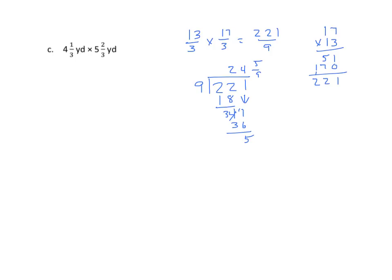Let's do the area model. Should come up with the same answer. 4 and 1 third decomposes to 4 plus 1 third, partition. 5 and 2 thirds, partition. Multiply 5 times 4, we get 20. 5 times 1 third is 5 thirds, which equals 1 and 2 thirds.